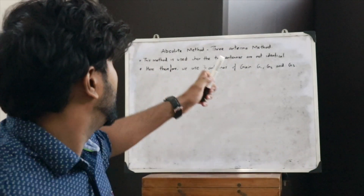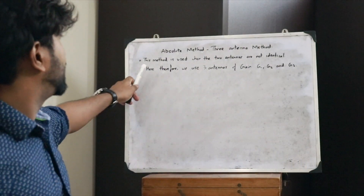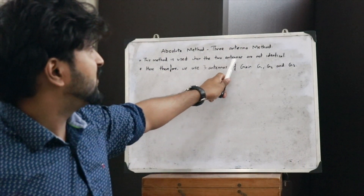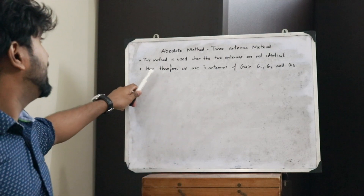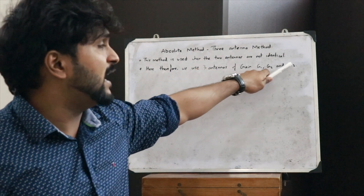Now, what do we do when we don't have two identical antennas? Then we use the three-antenna method, which also comes under the absolute method for calculation of antenna gain. For this purpose we use three antennas with gain values G1, G2, and G3 respectively. This method is used when the two antennas are not identical.